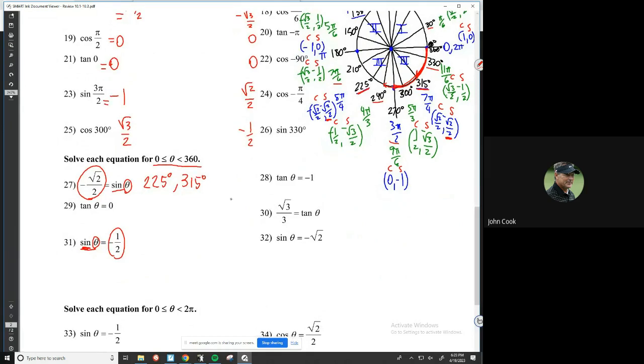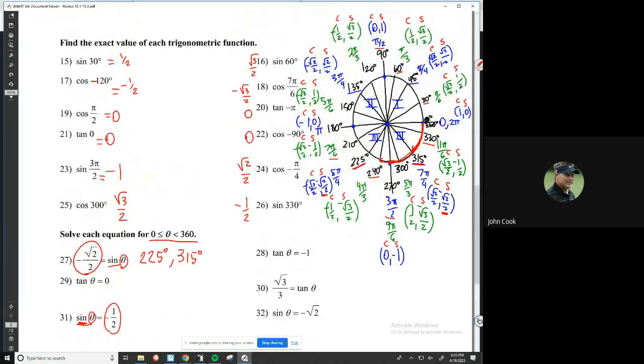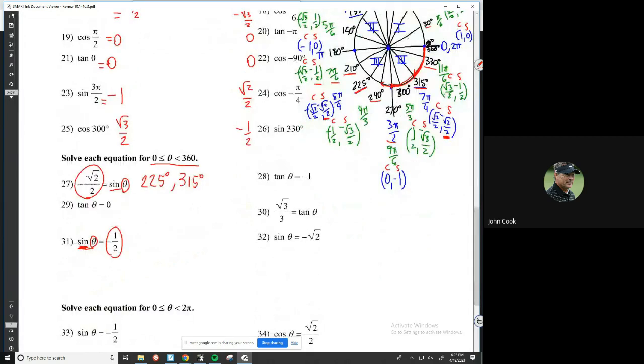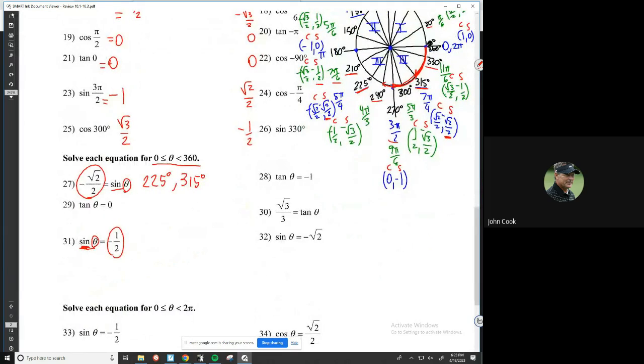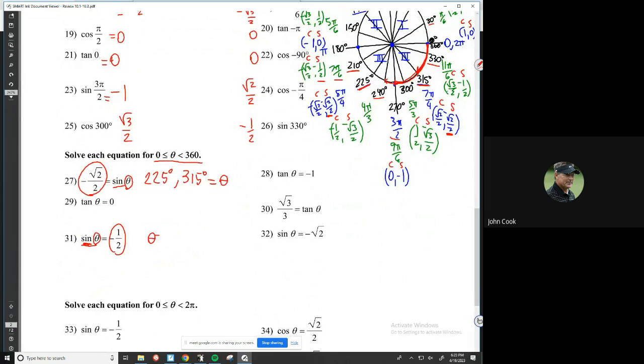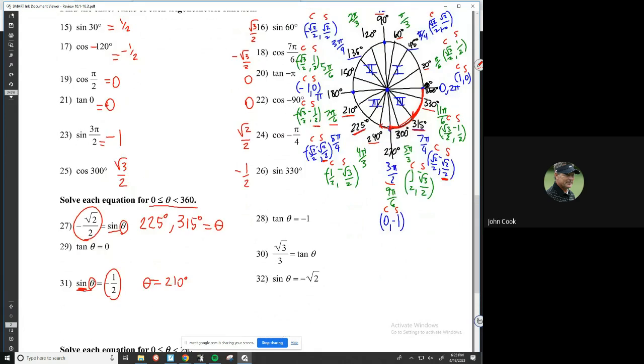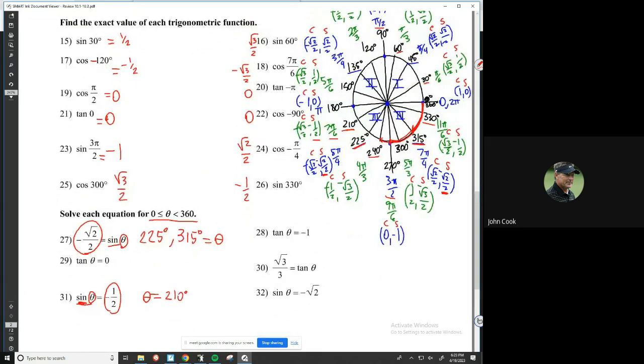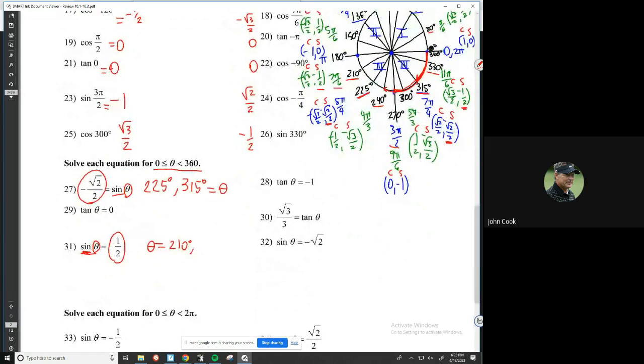Let's see here. Sine negative a half. There's one right there. So that'd be 210 degrees. So theta equals 210 degrees. Let's see another place where sine is negative a half. So sine is negative a half over here also at 330 degrees. So 330 degrees. So there are two answers where that happens.